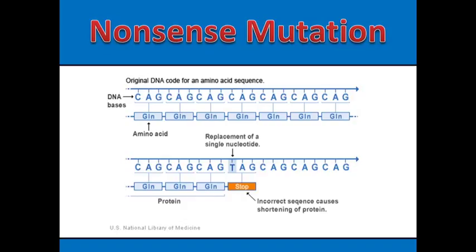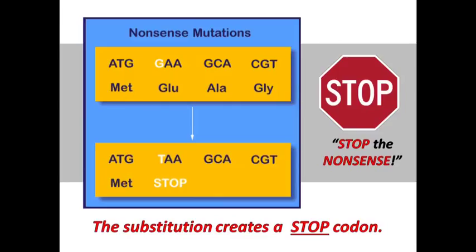A nonsense mutation is when a substitution causes the creation of a stop codon. You can see here that the codon CAG codes for the amino acid glutamine. But if a substitution causes that codon to be changed to TAG, a stop codon is formed. Notice that this also makes the protein much shorter than it should be. There are three different stop codons that can be formed, but any time a stop codon is created, it's a nonsense mutation. You can remember that nonsense mutations form stop codons by remembering the phrase: STOP THE NONSENSE!